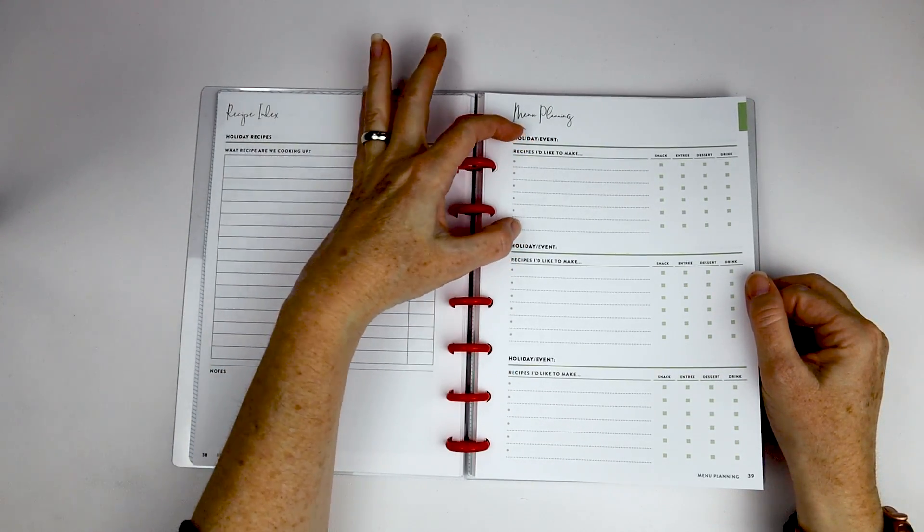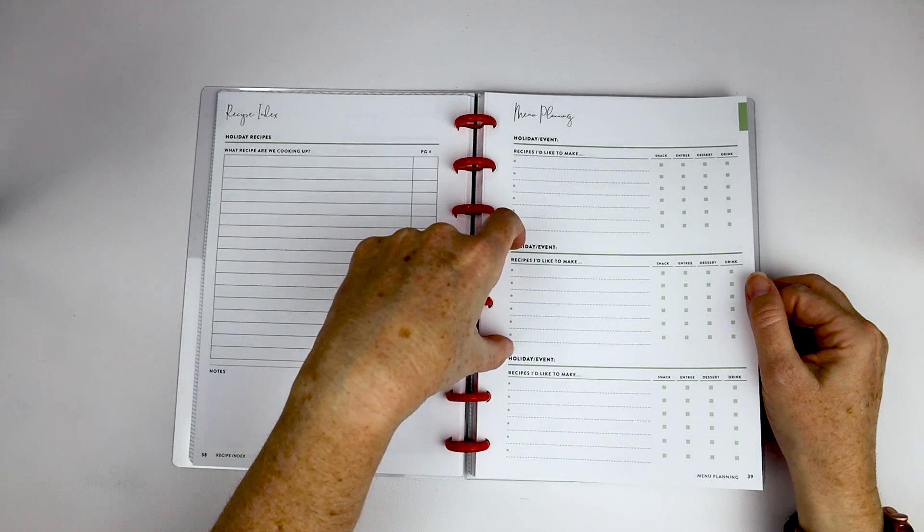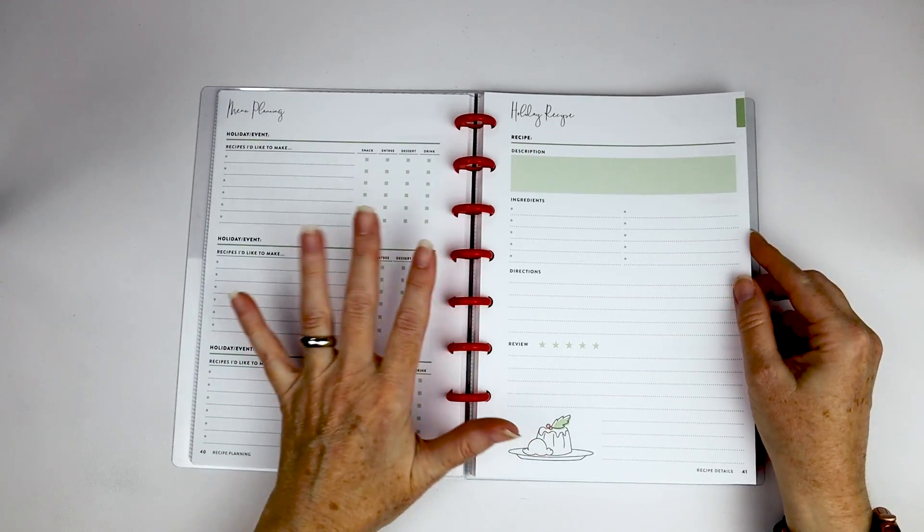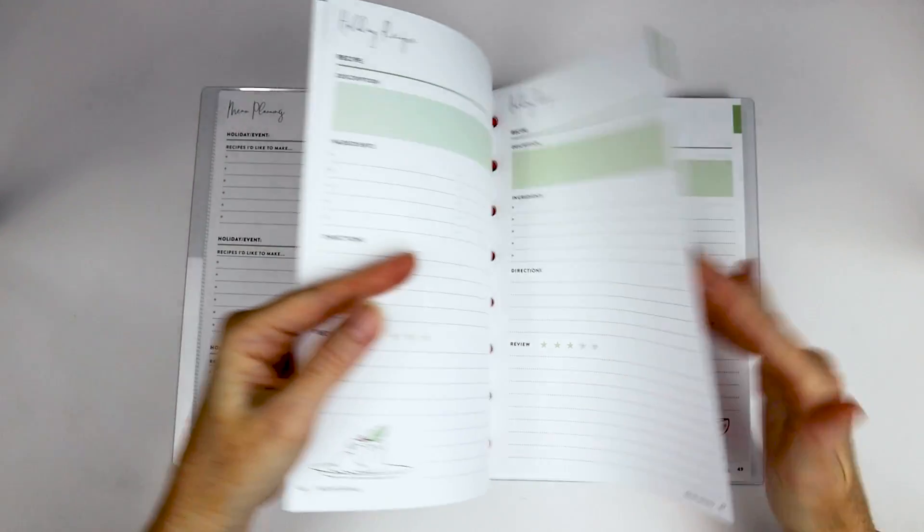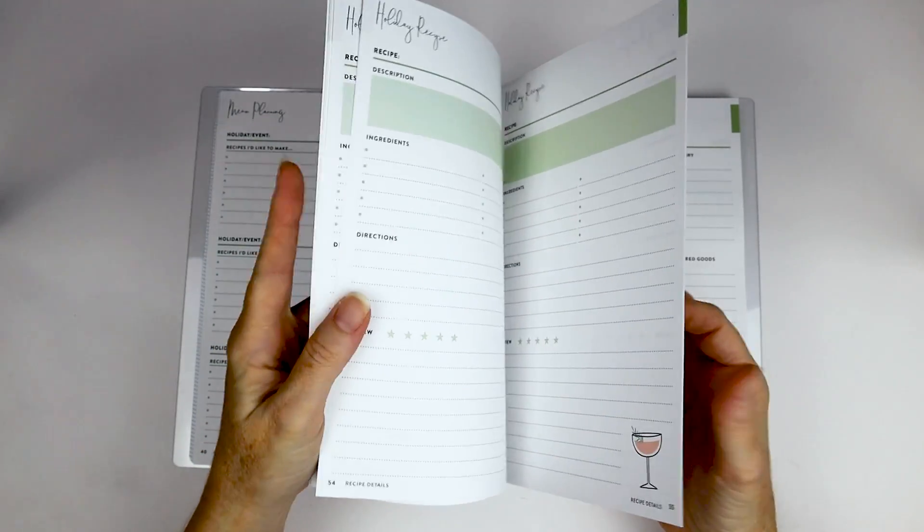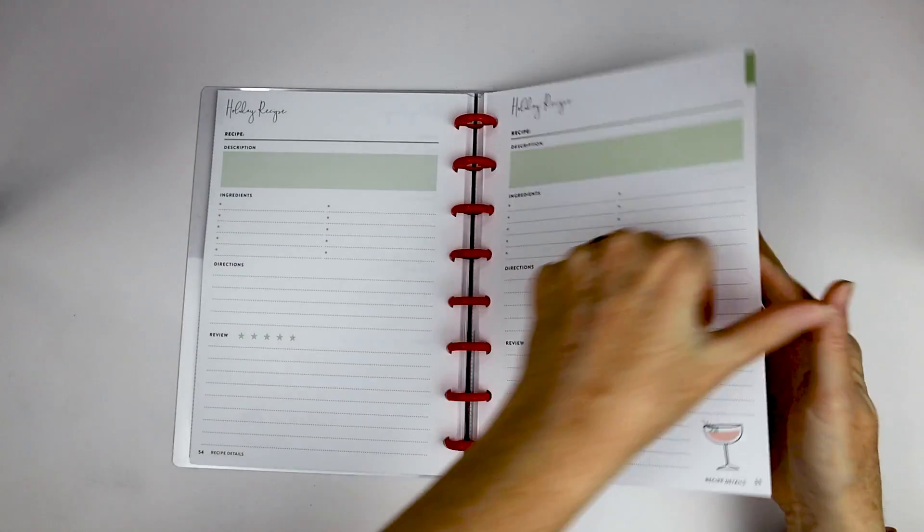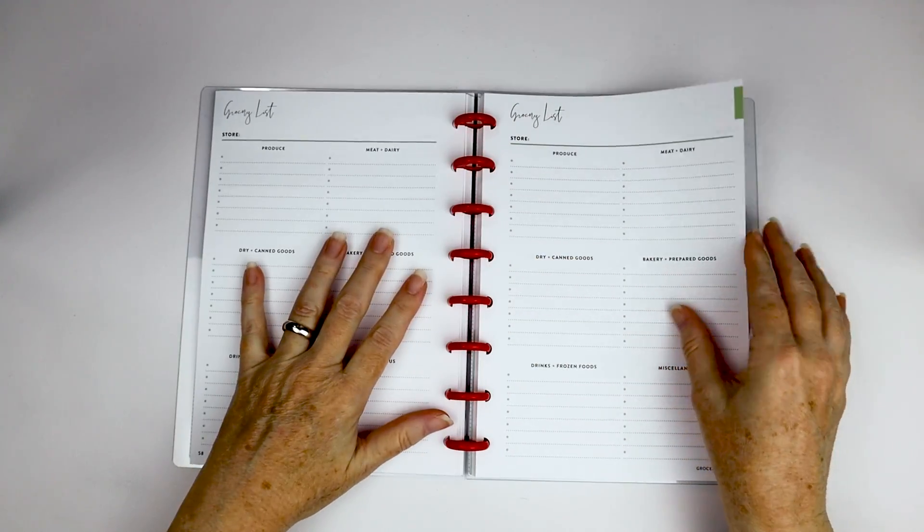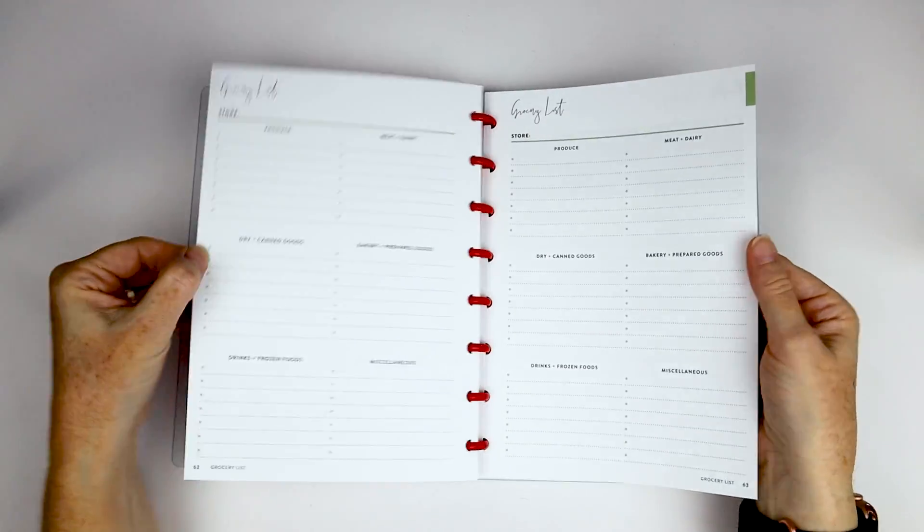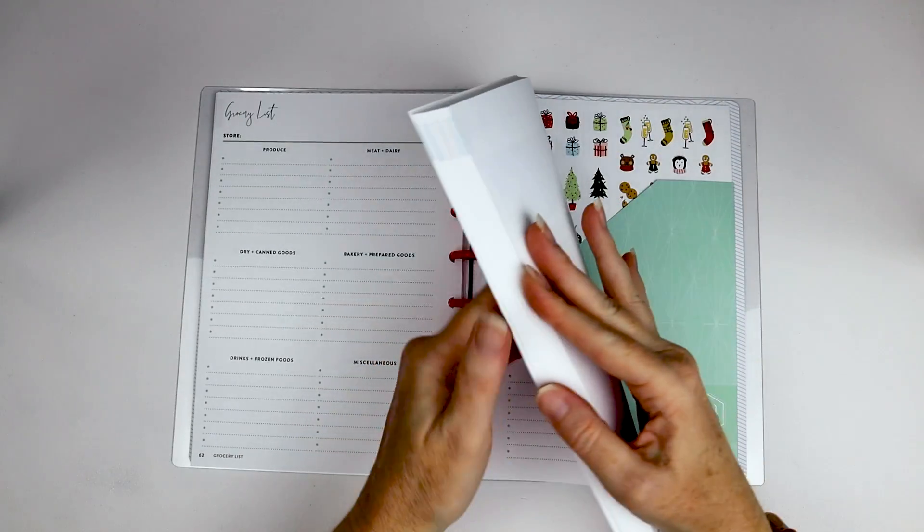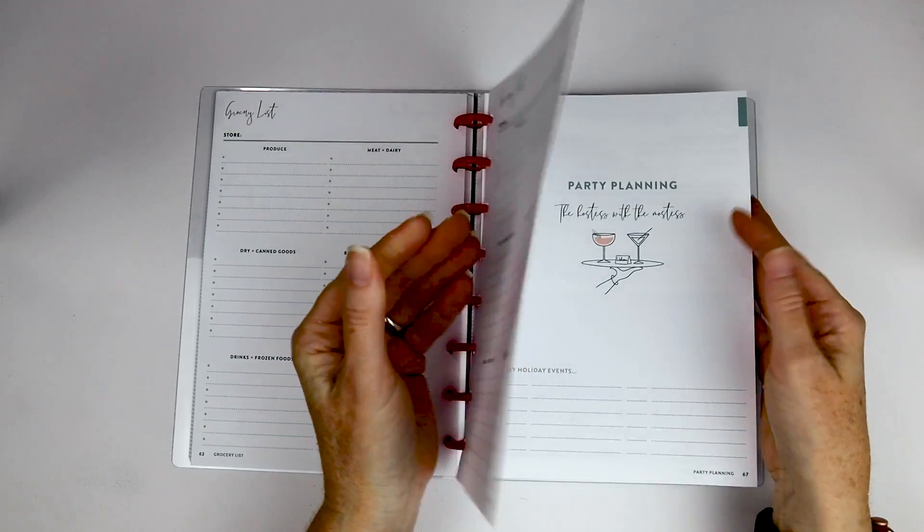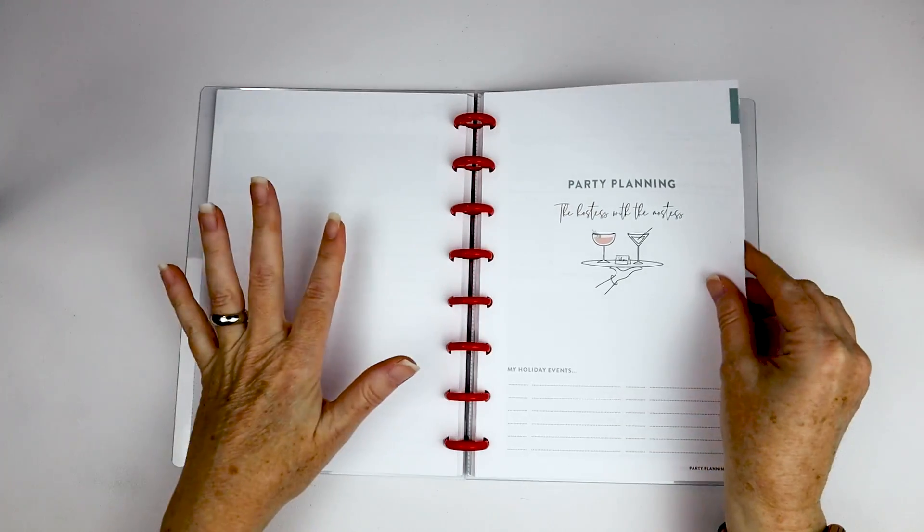And all of these pages are numbered, which I do really like. So here they do have a spot for recipes. So you can make an index and then note what page it's on. They do have menu planning. So if you have, like, a cookie exchange you're going to or some sort of potluck, then you have a place to keep track of things that you want to take. And then, like I mentioned, there's a whole bunch of holiday recipes. And after the recipes, there's also a section with a grocery list.